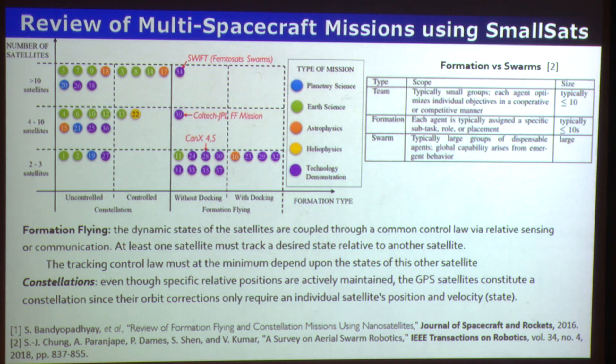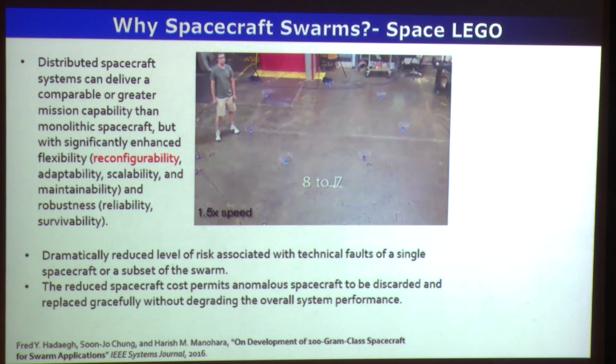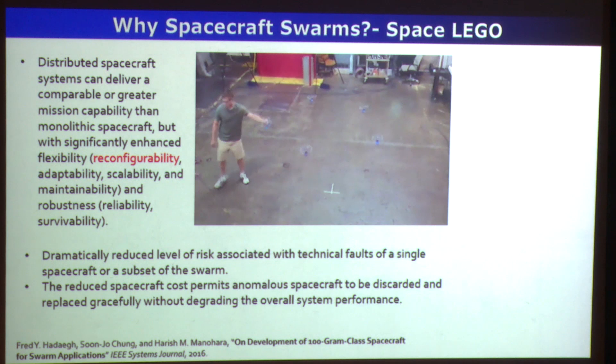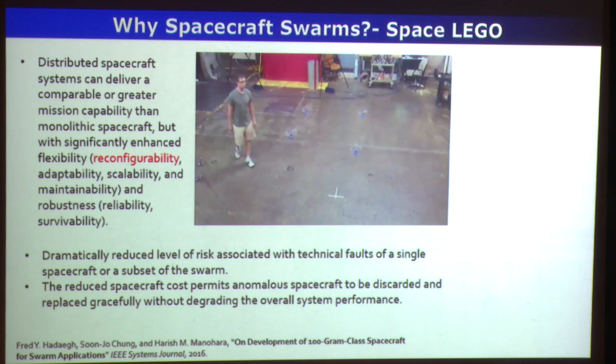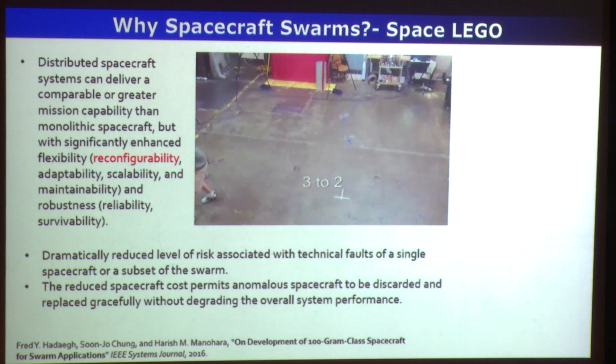Swarm typically refers to a much larger scale number of agents compared to a team, though the definition is subject to change. Why are we interested in multiple spacecraft? They are more robust. If a spacecraft malfunctions, you can replace it, or reconfigure the formation into a different shape to continue the mission. Reconfigurability, adaptability, scalability, and hopefully lower cost — because you have multiple redundant agents — are the key benefits.